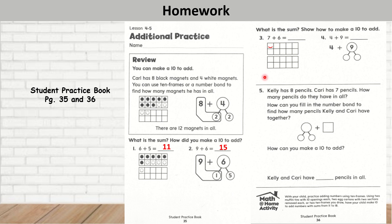Question 3: 7 plus 6. So I'm going to draw 7 circles: 1, 2, 3, 4, 5, 6, 7. And then I'm going to change it to X's for the 6: 1, 2, 3, 4, 5, 6. How many do I have altogether? I have 10, and I have 3 more. So 10 plus 3 is 13.